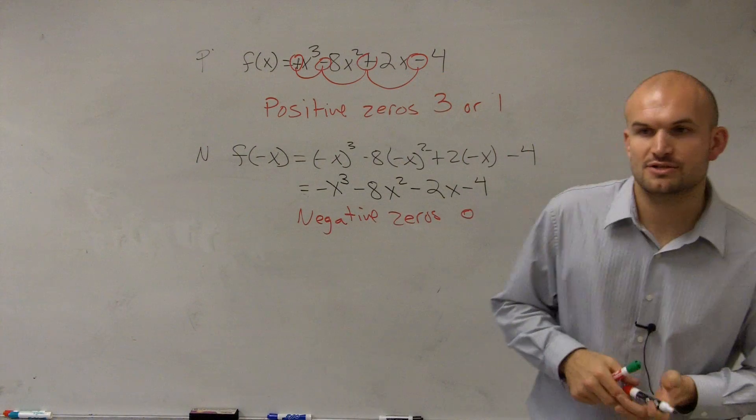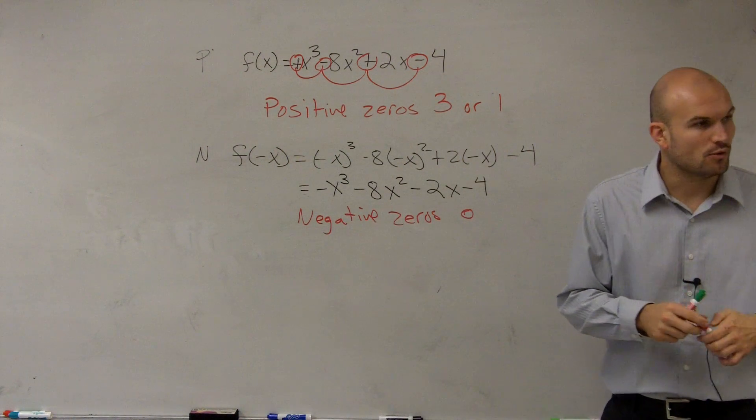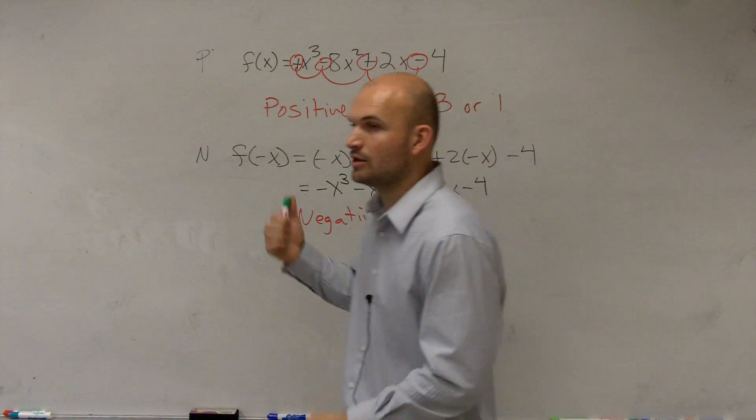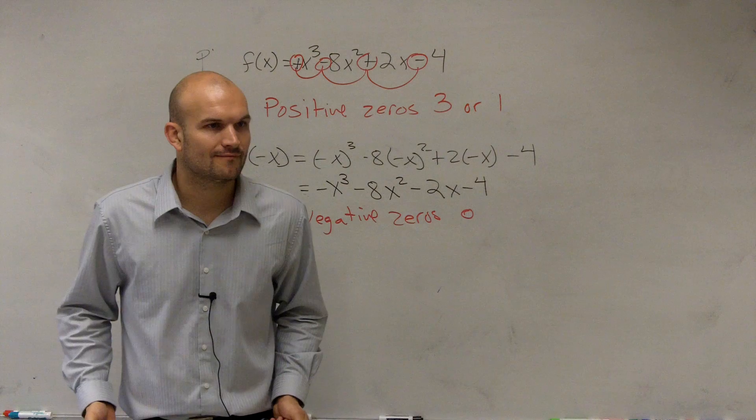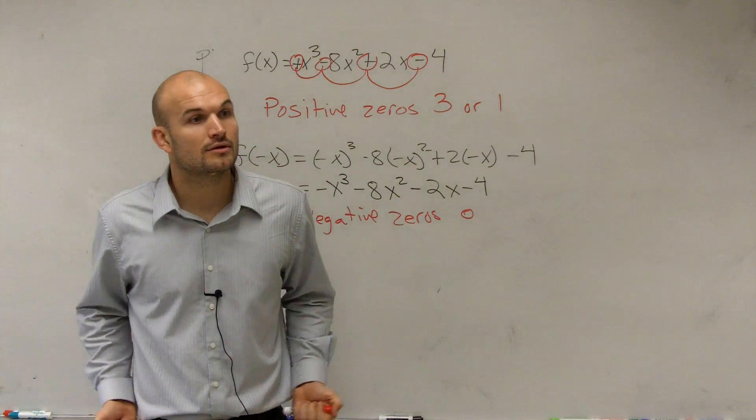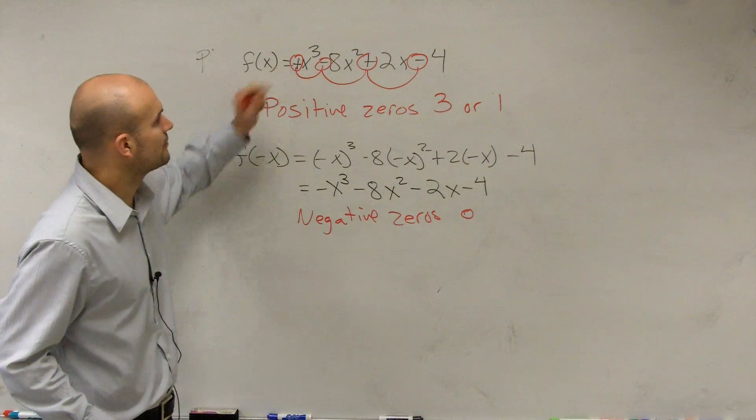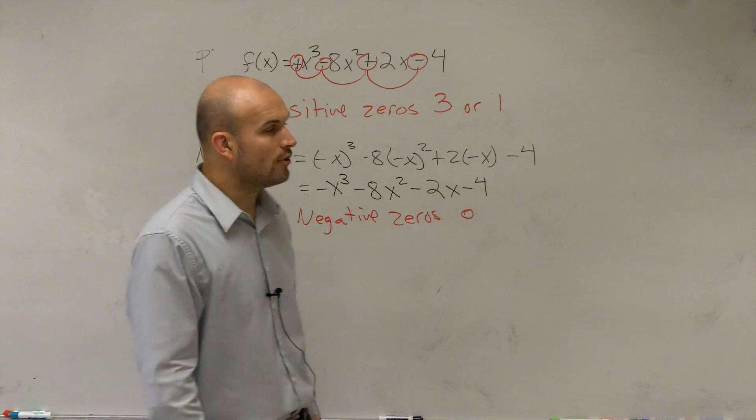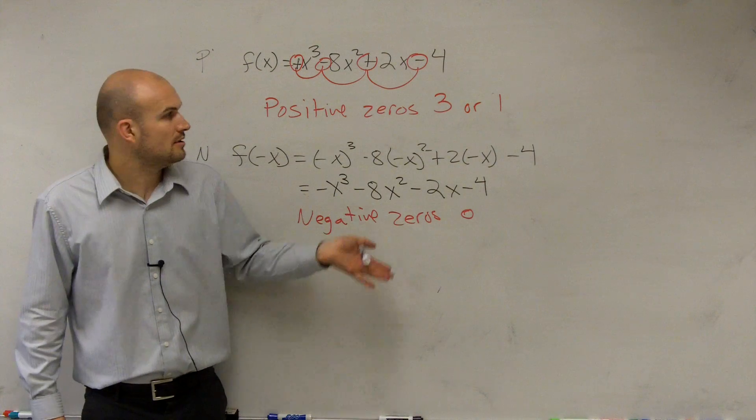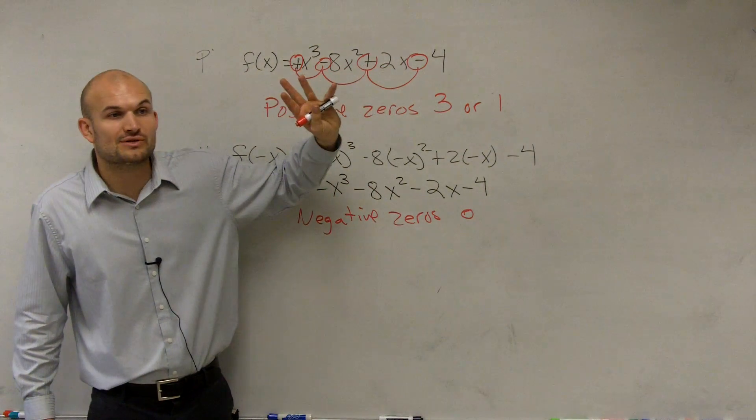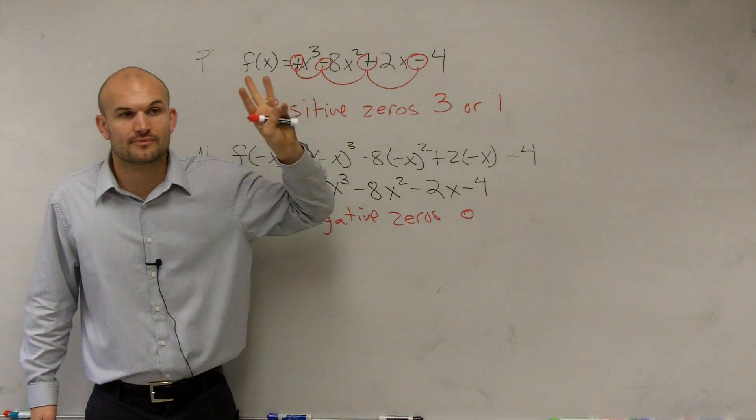So now, ladies and gentlemen, let's go and take a look at your imaginary. So we look at this and we say, all right, well, how many zeros am I going to have total? So what's my degree of my polynomial? 3, right? So therefore, I have no negative zeros, right? 3, so the maximum number of zeros I can have for this polynomial is 3.